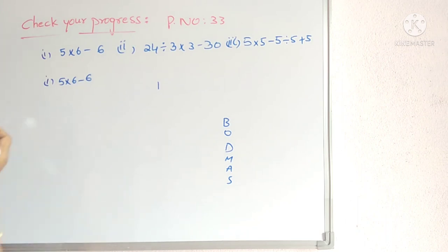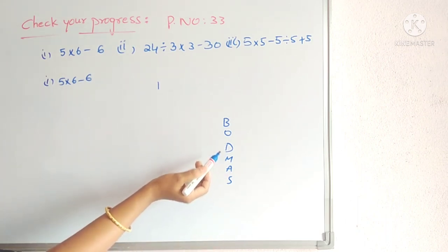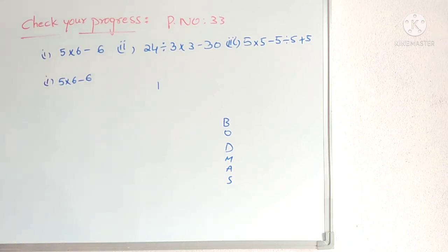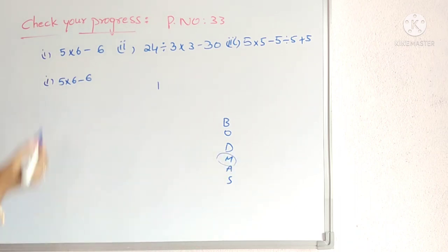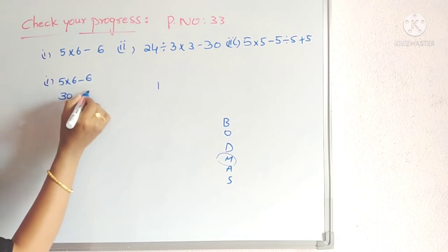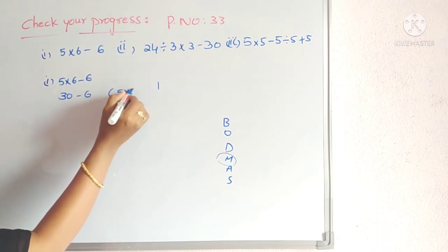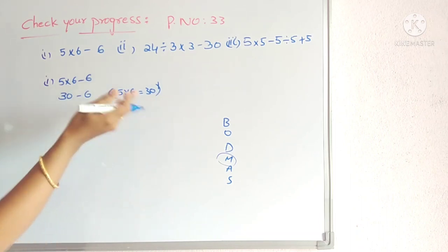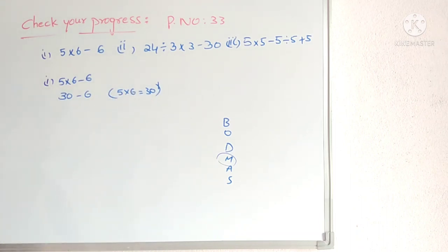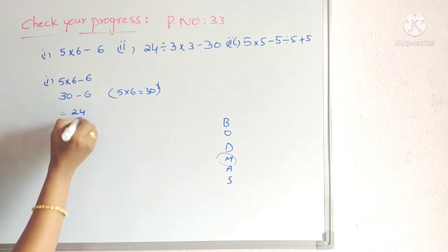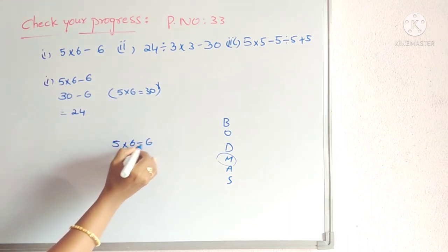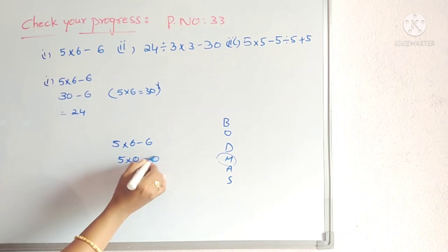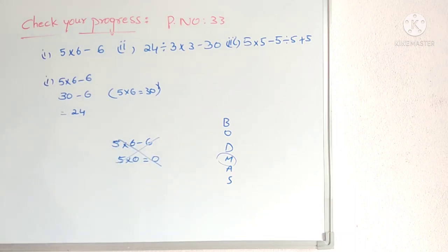Here only multiplication and subtraction are there, so first we have to do multiplication. 5 × 6 = 30, minus 6, so 30 − 6 = 24. That's it. If you mistakenly do 6 − 6 = 0 first, then 5 × 0 = 0, which is not right. We have to simplify by using the BODMAS rule.